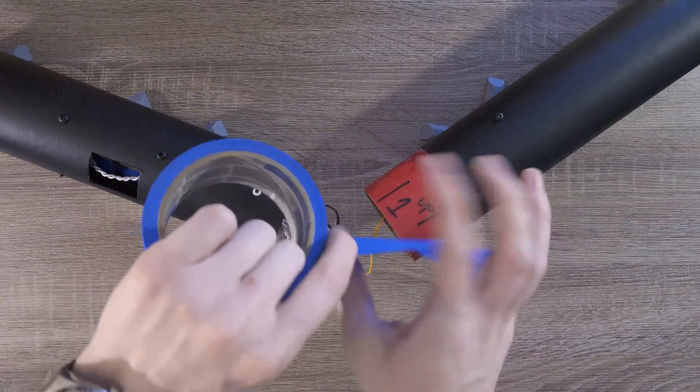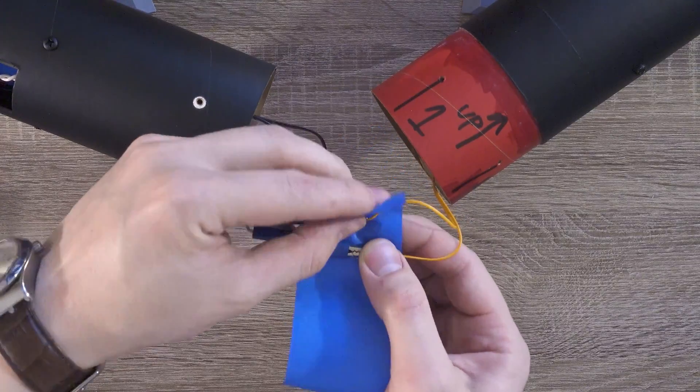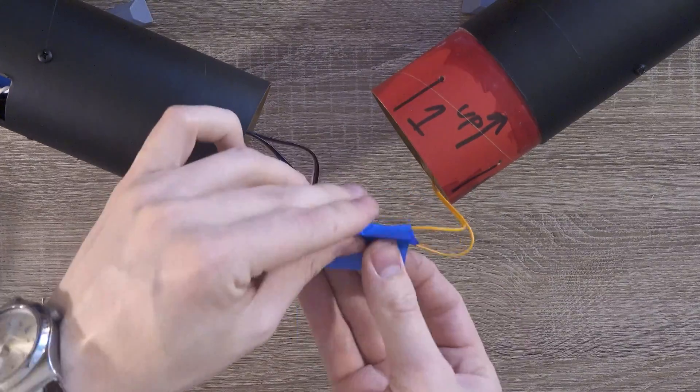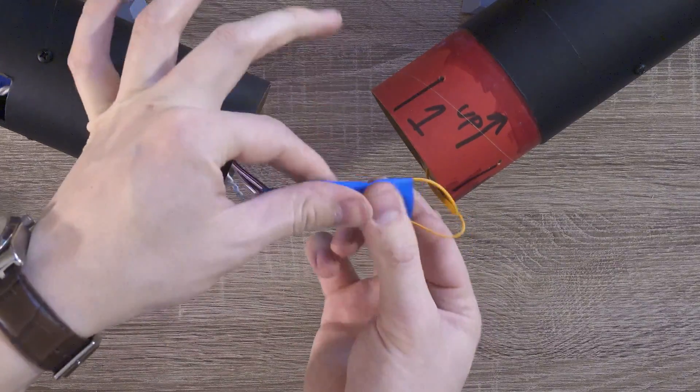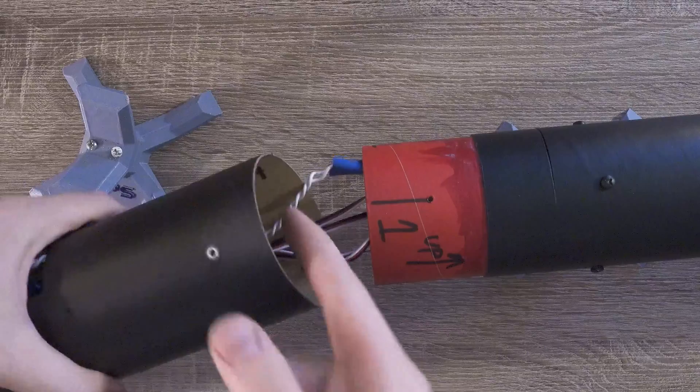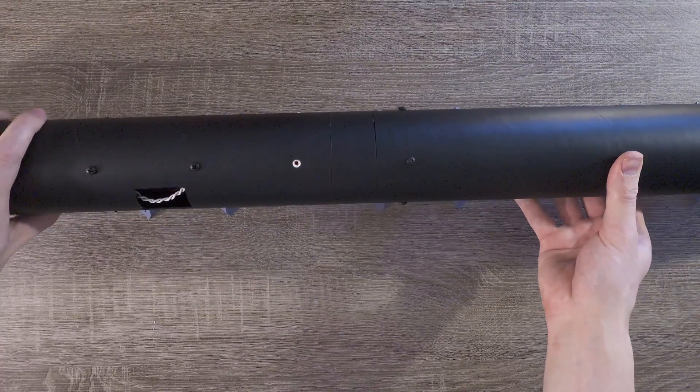Lastly, I'll cover these alligator clips in blue tape. If the clips were to accidentally make contact with each other, they could short out and signal wouldn't be able to fire the pyro charge. Now we'll tuck all the wires into the body coupler, connect the airframe sections, and then screw them together.